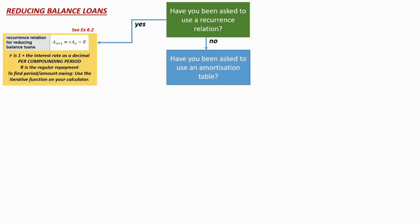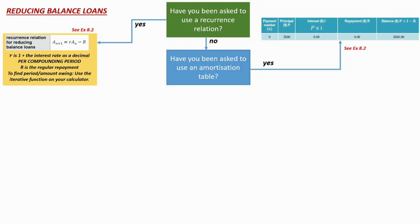If you haven't been asked to use a recurrence relation, move on to the next question: have you been asked to use an amortization table, which is a tabulated form of the recurrence relation? If yes, you'll have your payment period (N), principal as your starting amount, interest as the principal multiplied by the rate per period, the same repayment in every row, and the balance formula as principal plus interest minus repayment. That balance carries down to become the next row's principal.